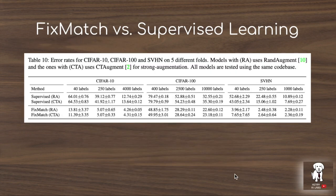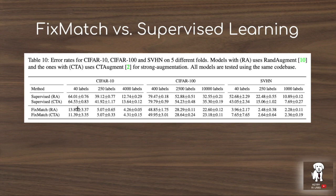This table compares the FixMatch semi-supervised learning algorithm with supervised learning on different percentages of labeled data. You can see from this chart that in the case of limited labeled data, supervised learning performs very poorly compared to using a semi-supervised learning algorithm such as FixMatch. This is especially evident in the case of 40 labels on the CIFAR-10 dataset, where supervised learning alone has an error rate of about 64% compared to 13% with FixMatch. This gives a sense of why we might be interested in semi-supervised learning and the performance benefit you can get.